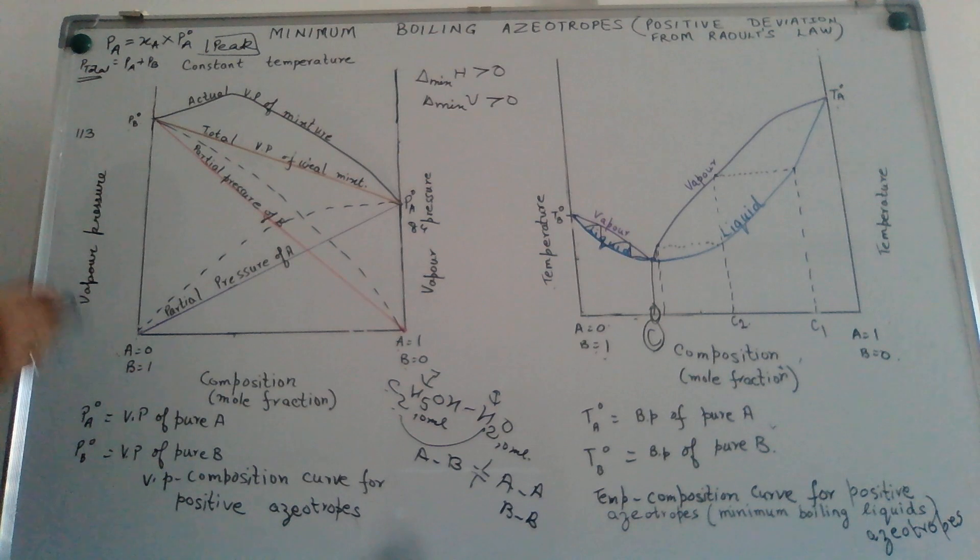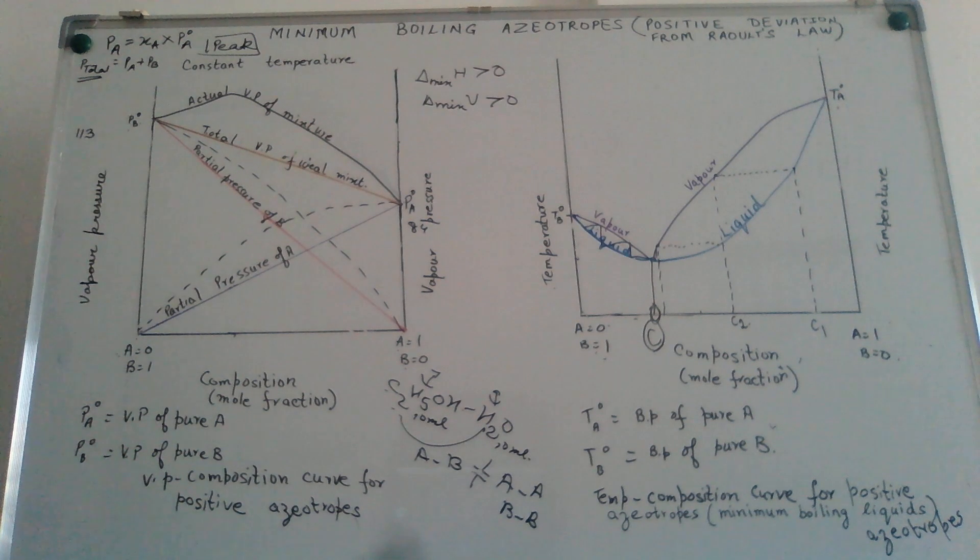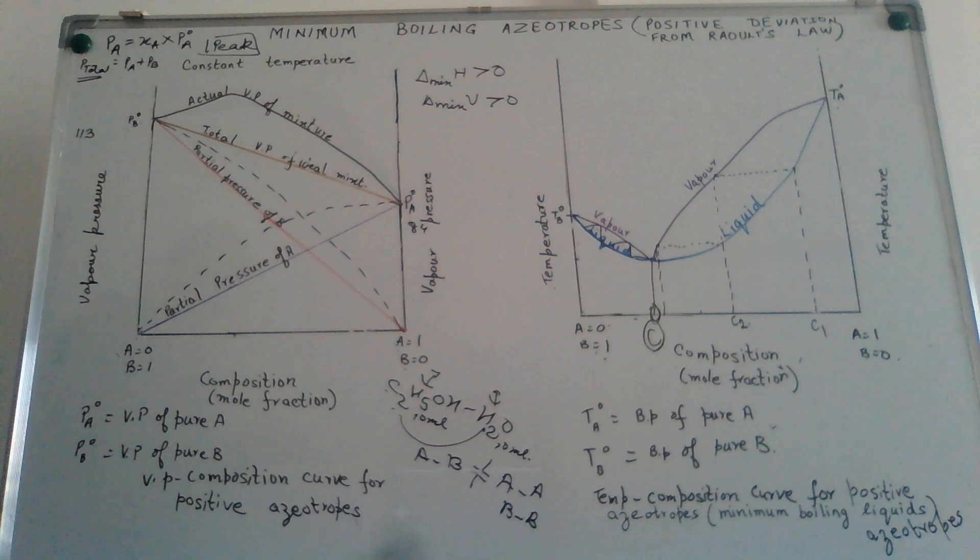And this, the composition becomes such that we are not able to separate such liquid mixtures. A third video will follow this, which will explain the maximum boiling azeotropes or those liquid mixtures which show negative deviation from Raoult's law. You will also find a write-up on this on the website, Learning Chemistry is Fun Google Site. Please do go through it. And if you have any doubts, please mail us.